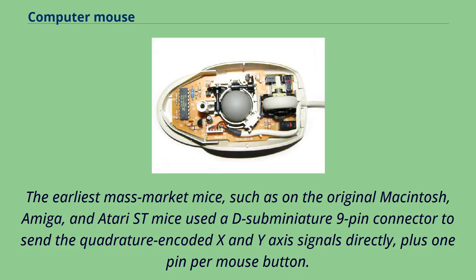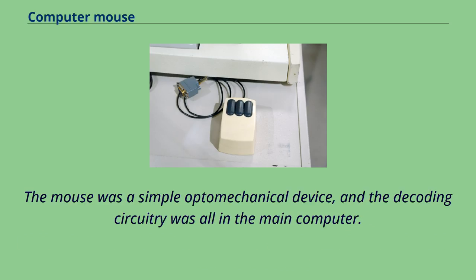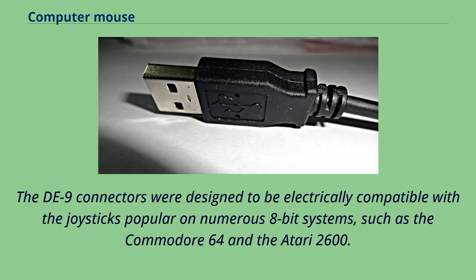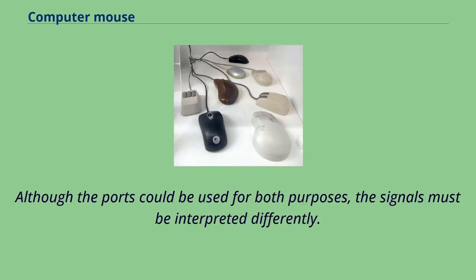The earliest mass-market mice, such as those on the original Macintosh, Amiga, and Atari ST, used a D sub-miniature 9-pin connector to send the quadrature-encoded X and Y axis signals directly, plus one pin per mouse button. The mouse was a simple optomechanical device, and the decoding circuitry was all in the main computer. The DE9 connectors were designed to be electrically compatible with the joysticks popular on 8-bit systems such as the Commodore 64 and Atari 2600. Although the ports could be used for both purposes, the signals must be interpreted differently.